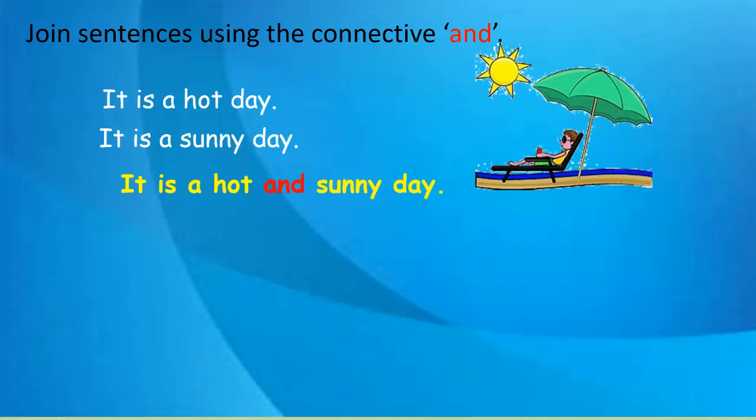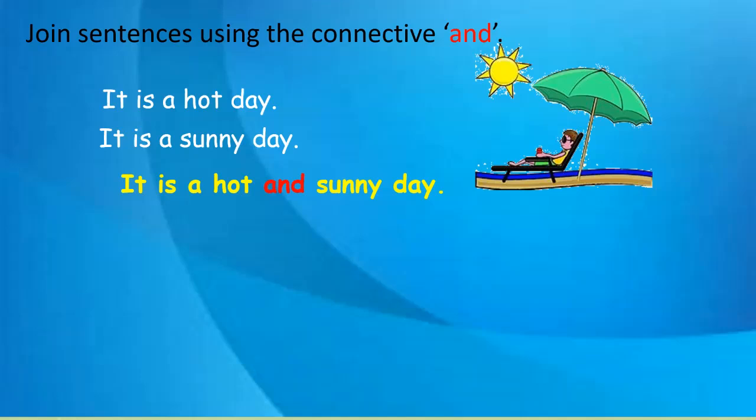Remember, a sentence has only one capital letter at the beginning and a full stop at the end. We wrote the first sentence 'It is a hot day' as it is, without the full stop. From the second sentence we did not repeat 'it is a' — we just wrote 'sunny day'. So the two sentences are joined in one sentence using 'and'.